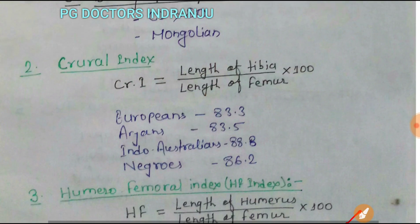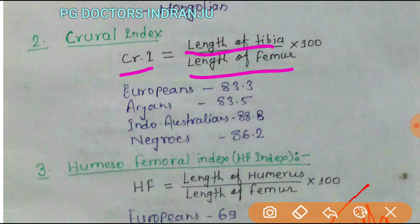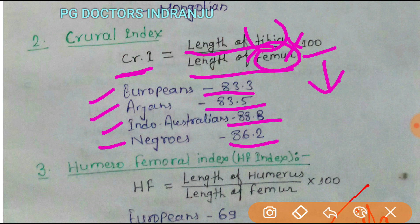Next, for race determination, there is the crural index. The crural index equals the length of the tibia divided by the length of the femur, multiplied by 100. All indices for race determination use the formula multiplied by 100. In Europeans it is 83.3, in Australians it is 88.8, and in Negroes it is 86.2. A greater value indicates that femur length is shorter and tibia length is longer.